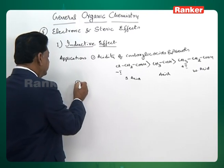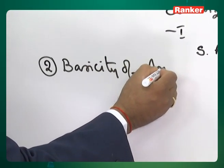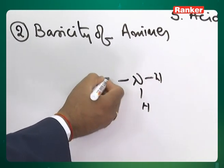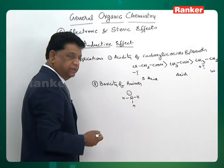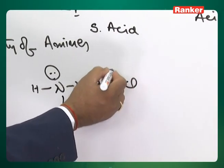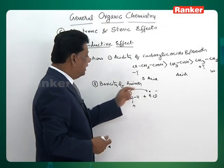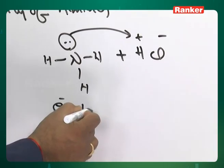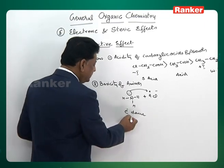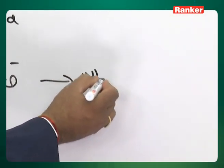Now let us go to the second application: basicity of amines. Ammonia is said to be a base as per different types of hypotheses. When HCl is added, H+ is able to receive electrons from ammonia, so ammonia is a base. This gives ammonium chloride — a salt formation takes place.